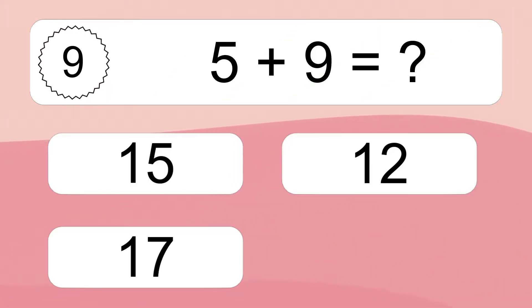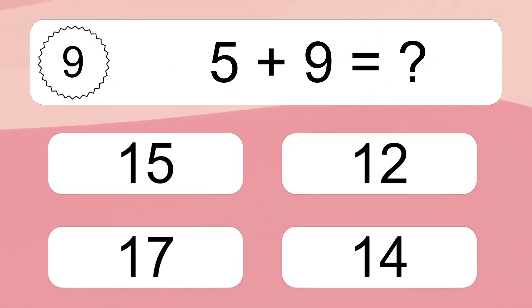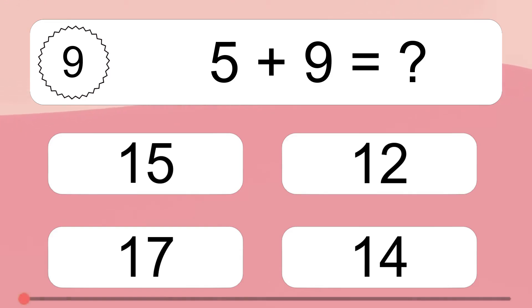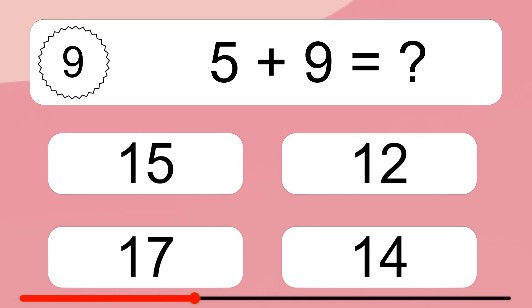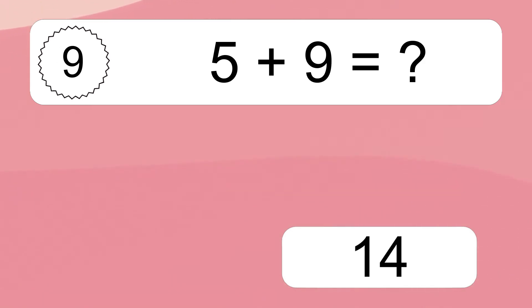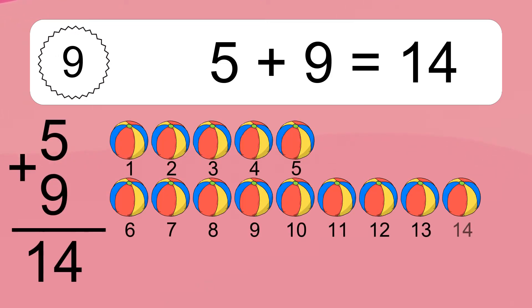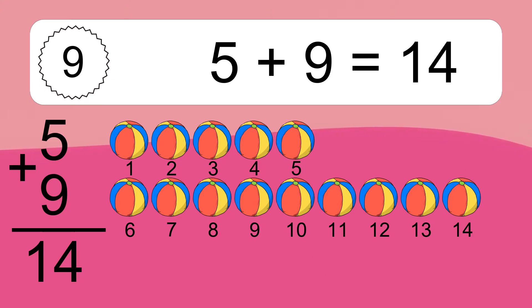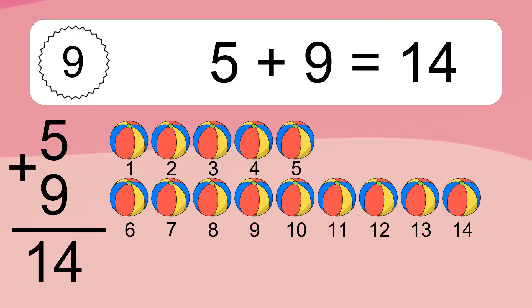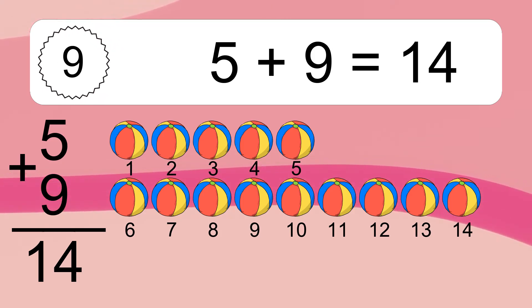5 plus 9 equals what? 5 plus 9 equals 14. Let's count it: 1, 2, 3, 4, 5, 6, 7, 8, 9, 10, 11, 12, 13, 14.